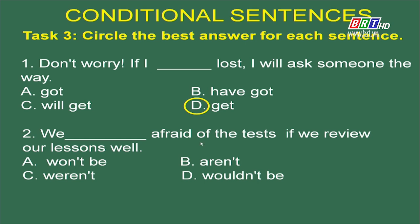Sentence 2: (We) are afraid of the test / if we review our lessons well — 4 lựa chọn: A. Won't be; B. Aren't; C. Won't; D. Wouldn't be. Chúng ta cần hoàn tất mệnh đề chính — mệnh đề if đang chia ở thì hiện tại đơn, vậy đây là câu điều kiện loại 1. Mệnh đề chính sẽ là thì tương lai đơn hoặc động từ khiếm khuyết ở hiện tại. Lựa chọn B, C, D không phù hợp — chỉ có lựa chọn A. So the answer is A: won't be.